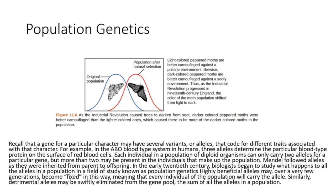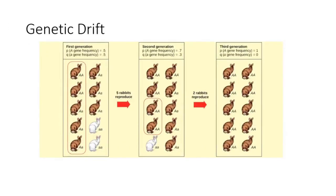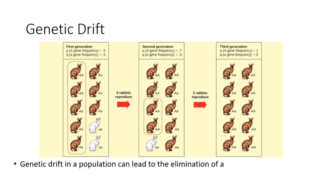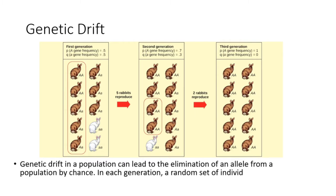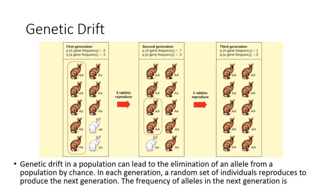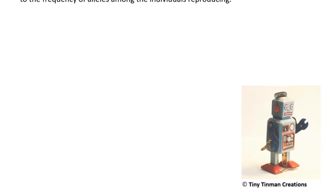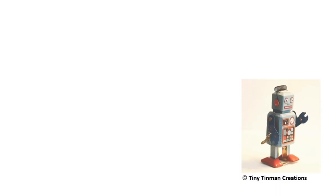The gene pool is the sum of all the alleles in a population. Genetic drift in a population can lead to the elimination of an allele by chance. In each generation, a random set of individuals reproduces to produce the next generation. The frequency of alleles in the next generation is equal to the frequency of alleles among the individuals reproducing. That's a quick summary on variation for the exam — make sure to go over the learning objectives and past papers.